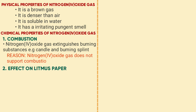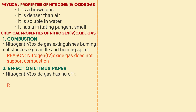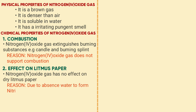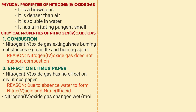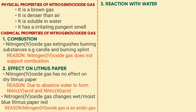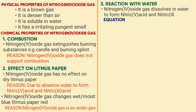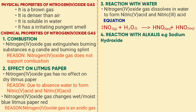Effect on litmus paper — two situations. Effect on dry litmus paper: nitrogen dioxide has no effect on dry litmus paper. Reason: due to the absence of water to form nitric acid. Effect on wet blue litmus paper: nitrogen dioxide changes moist blue litmus paper red. Reason: it is an acidic gas. Reaction with water: nitrogen dioxide dissolves in water to form nitric acid and nitrous acid. Equation: 2NO₂ + H₂O → HNO₃ + HNO₂.